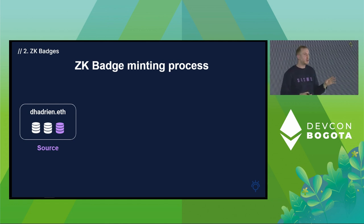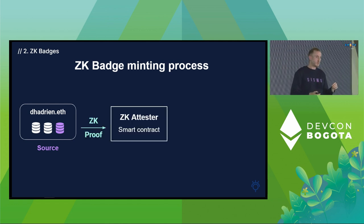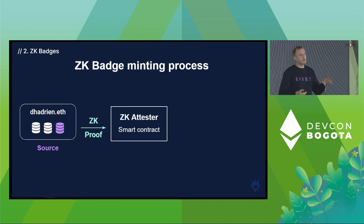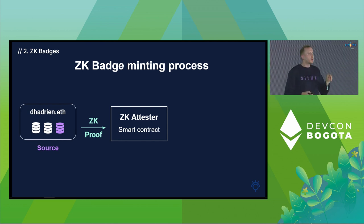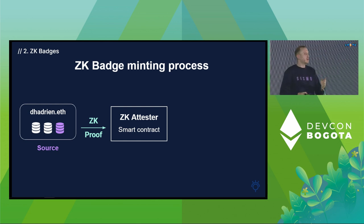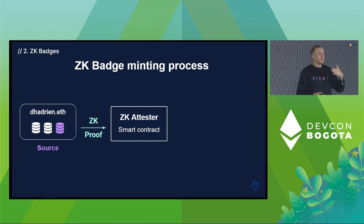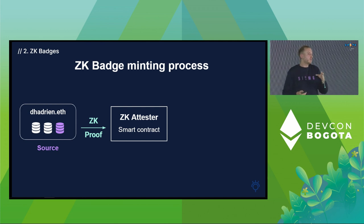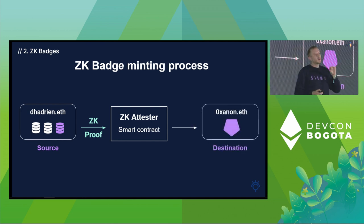The process of minting a ZKBadge is pretty simple. I have a source account — say adrian.eth — with my sovereign data, one piece of which is that I have a CryptoPunk. I generate a ZK proof and send it to the attester. The attester validates it: adrian.eth has a punk, badge minted. Importantly, the ZK attester at no point will know about my source address. The last thing it does is store nullifiers.